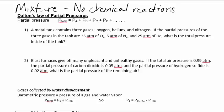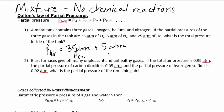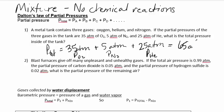The problems are going to look like this. You get different gases and it tells you what the partial pressure is. Your total pressure is going to be the 35 atmospheres — this is the pressure of oxygen — plus 5 atmospheres, the pressure from nitrogen, and 25 atmospheres, the pressure of helium.